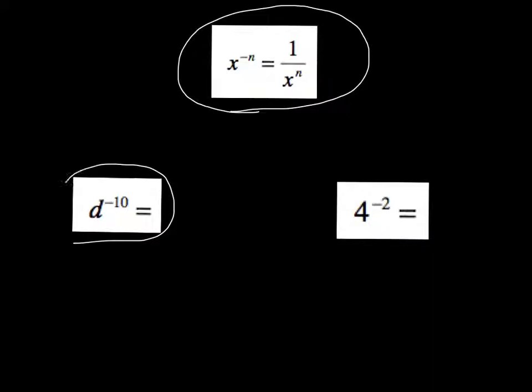So in this example to the lower left, while d to the tenth would mean multiply by d ten times, d to the negative tenth means we need to divide by d ten times. In other words, that d to the tenth is going to go into our denominator. In this numeric example, four to the negative second would become one over four squared, which we certainly could simplify in this case to one sixteenth.